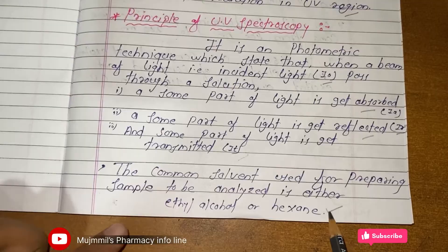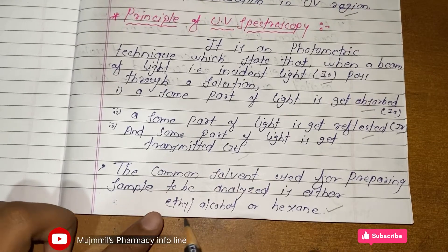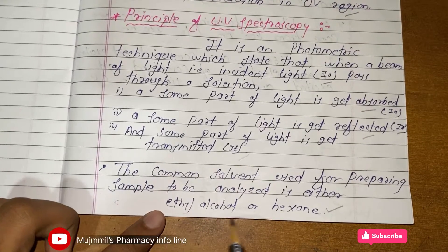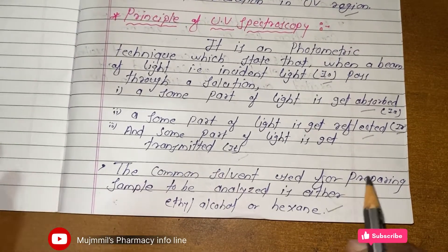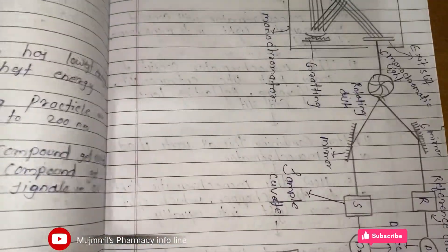The common solvents used for preparing the sample to be analyzed in UV-Visible spectroscopy are either ethyl alcohol or hexane.